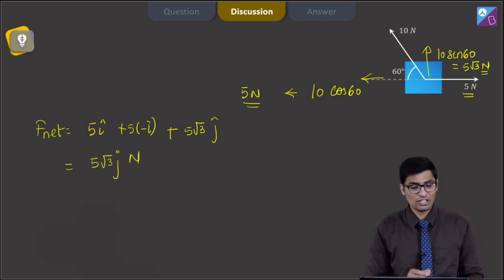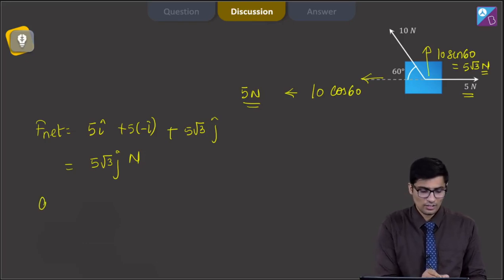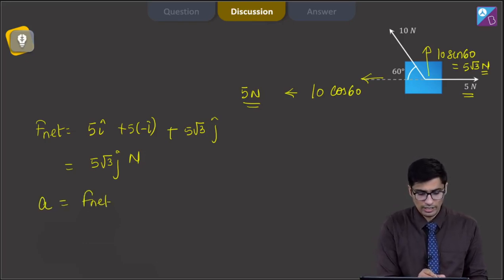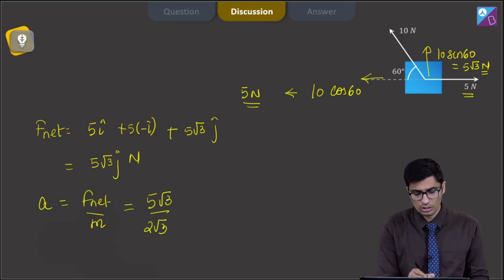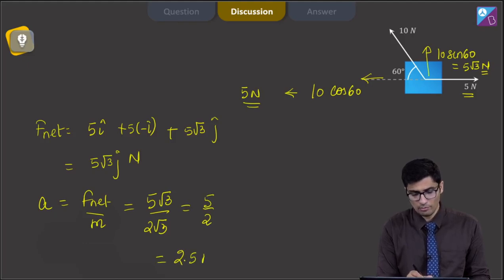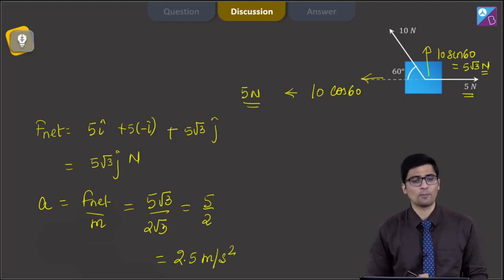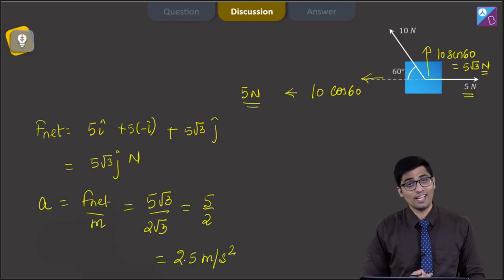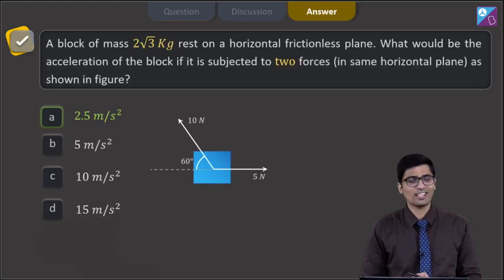We have to find the acceleration. Acceleration equals net force divided by mass, which is 5√3 divided by 2√3, giving a value of 5/2 = 2.5 meters per second square. Hence the correct answer is option A.